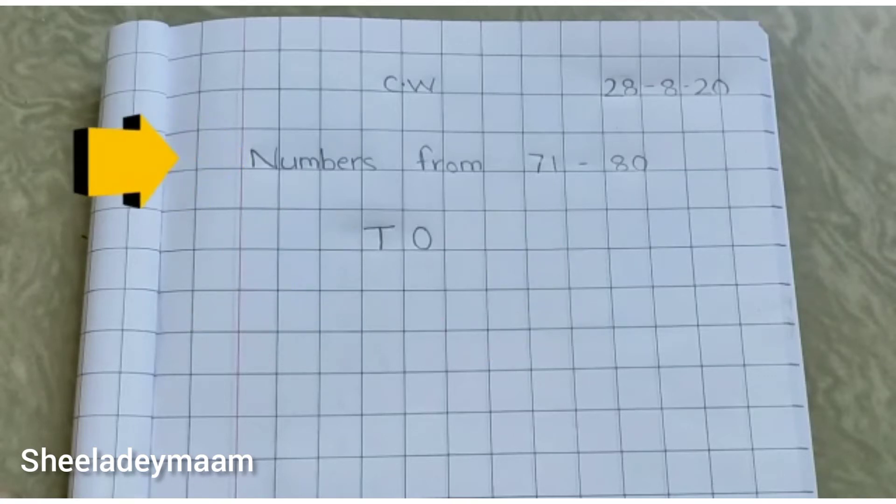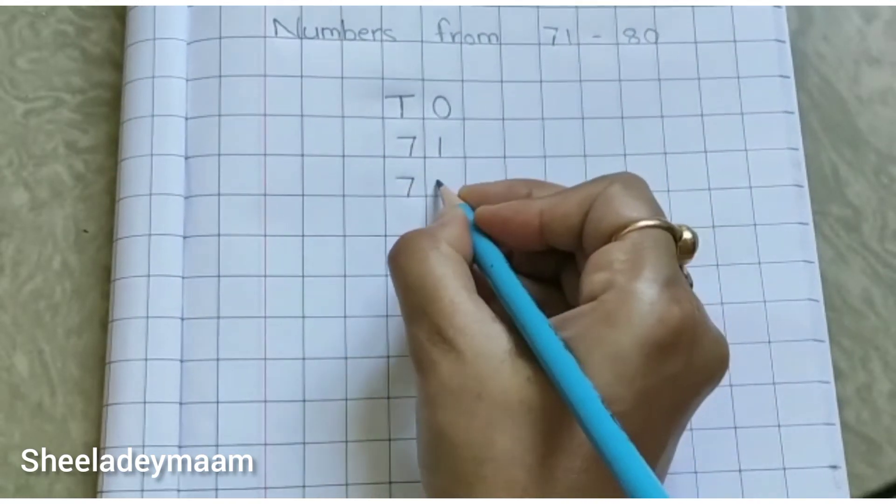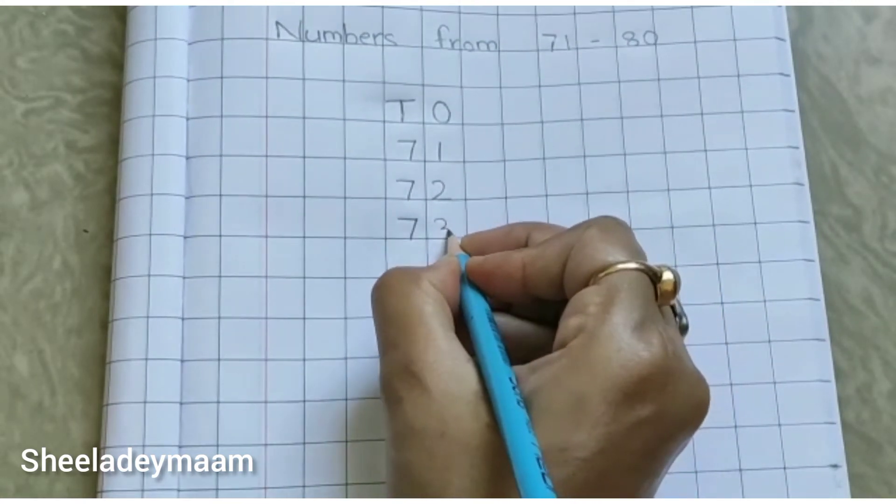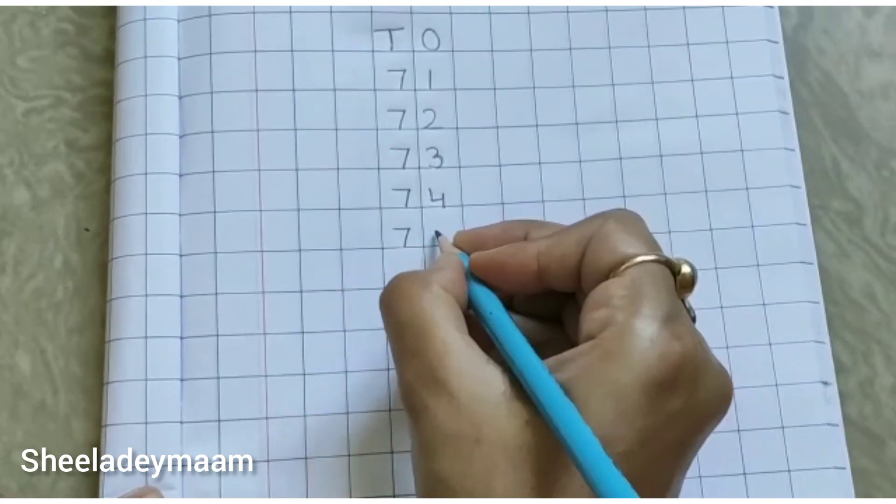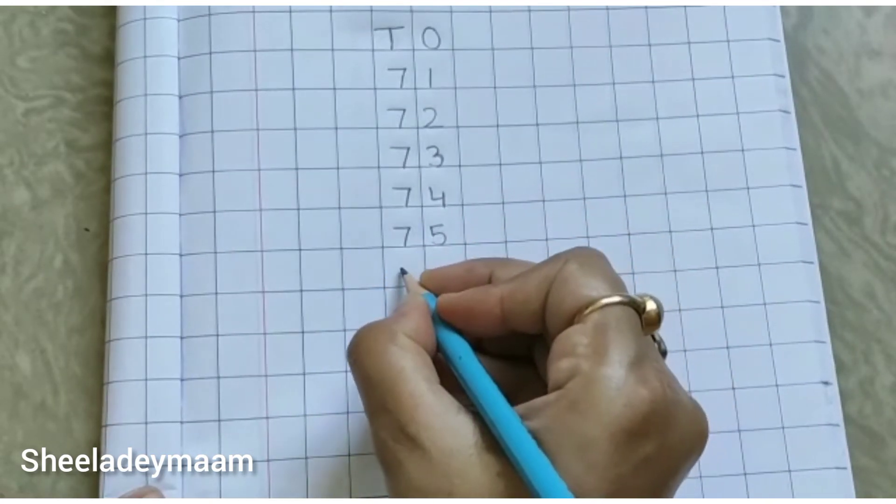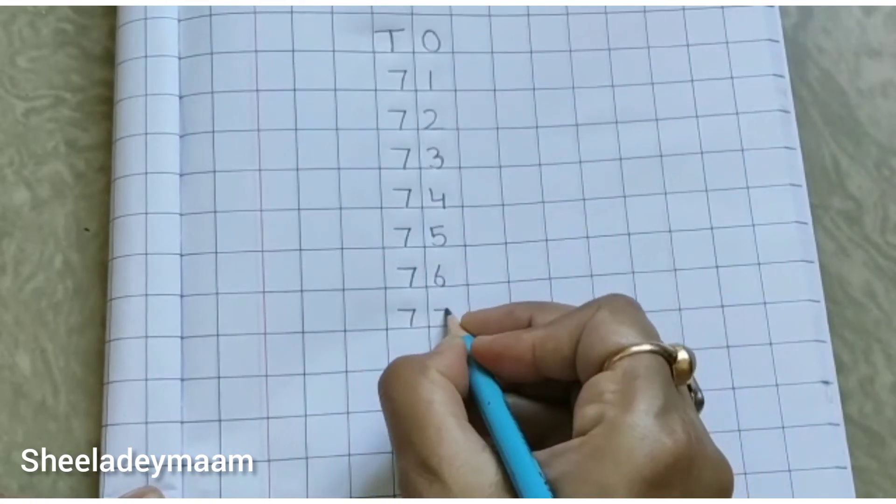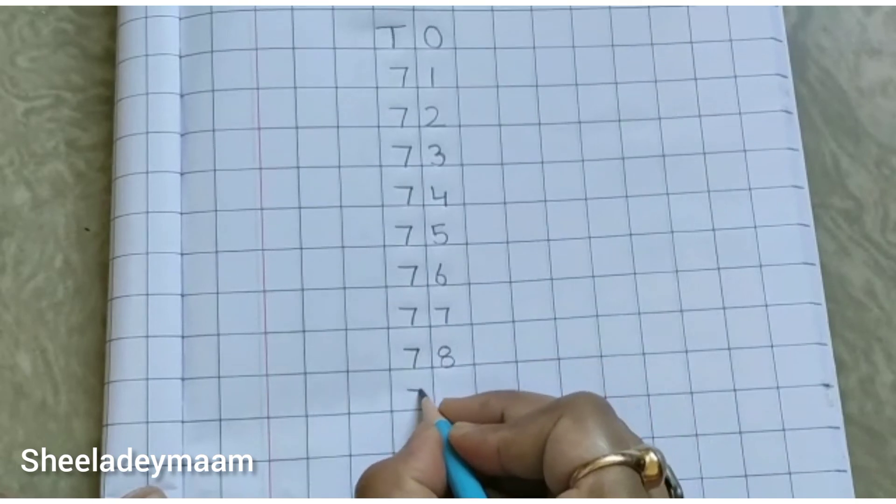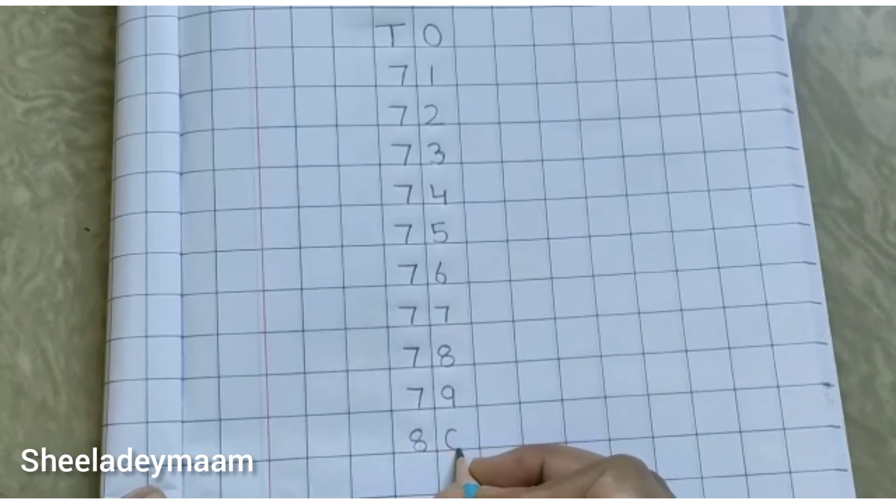Now we will write numbers from 71 to 80. Let's begin: 71, 72, 73, 74, 75, 76, 77, 78, 79, 80.